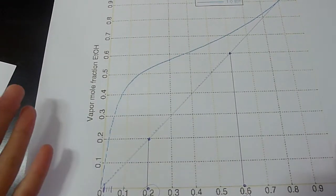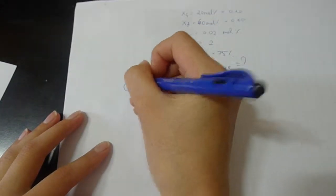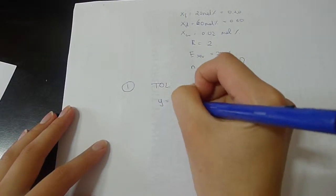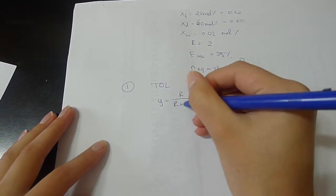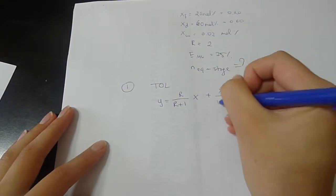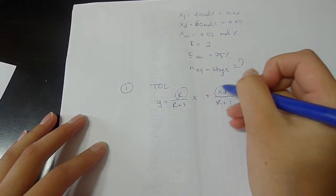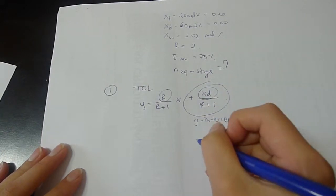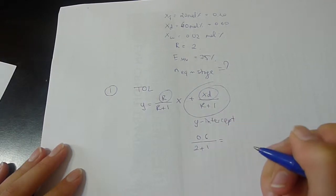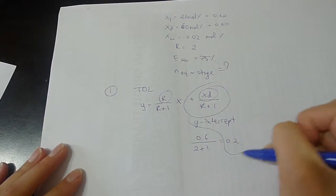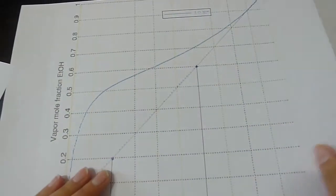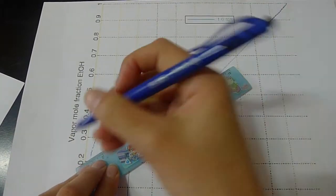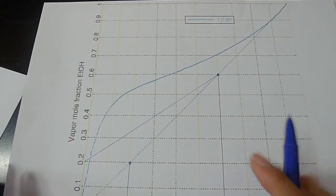So let's now calculate the top operating line. So TOL. Do you guys remember the equation? Top operating line equation is reflux number over reflux number plus 1 times X plus XD over R plus 1. So this is known and this is known. And this is our y-intercept. So now we can find our y-intercept. XD is 0.6. R is 2 plus 1. 0.6 over 3 is 0.2. So our y-intercept for TOL is 0.2. So y-intercept would be here. So TOL is going to be connected like so.